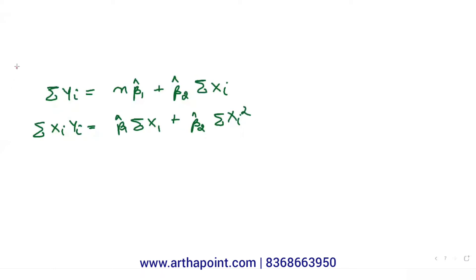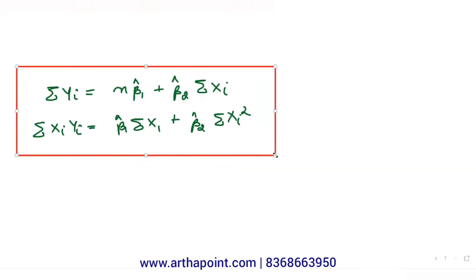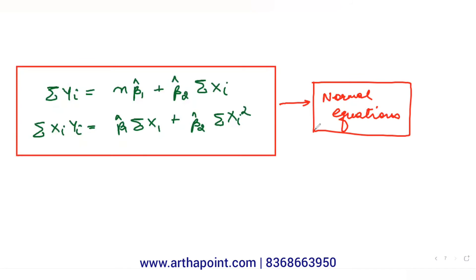These two equations are called the normal equations. Whenever we prove anything going forward, I will refer directly to these normal equations, and you should understand they were derived by minimizing the sum of squared error terms.